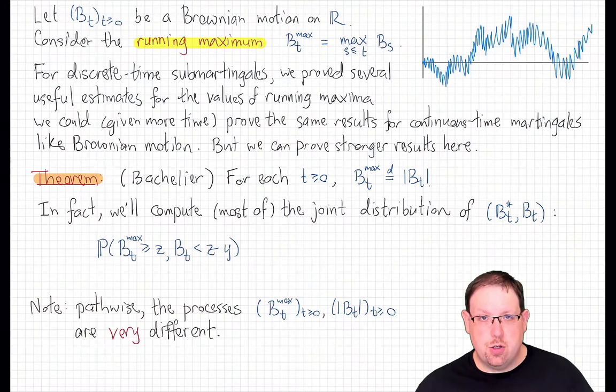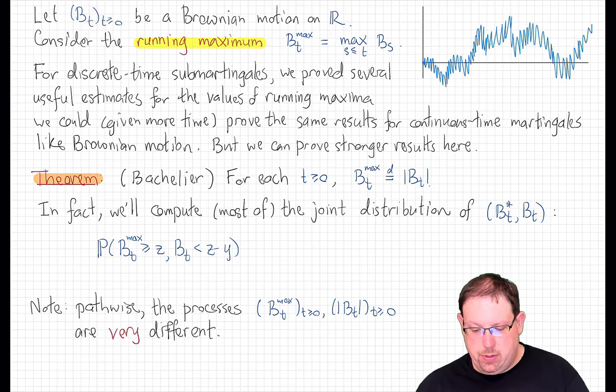The strong Markov property and consequences like the reflection principle for Brownian motion are very powerful tools, especially if you're doing exact computations of distributions of various statistics associated to the process. Let's consider the running maximum of Brownian motion — the new process bt_max, which is the maximum over s less than or equal to t of bs.